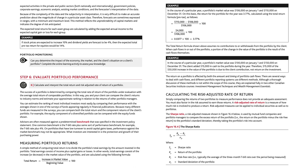Measuring portfolio returns: a simple method of computing total returns is to divide the portfolio's total earnings by the amount invested in the portfolio. Total earnings consist of income plus capital gains or losses — the increase or decrease in the market value of the portfolio — calculated using the formula: increase in market value divided by the beginning value, times 100. For example, a portfolio's market value was $106,000 on January 1st and $110,000 on December 31st. The return for the portfolio for the year was 3.77%: (110,000 minus 106,000 = 4,000) divided by the beginning value of 106,000, times 100.